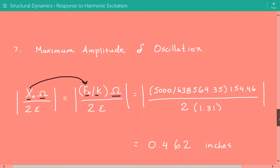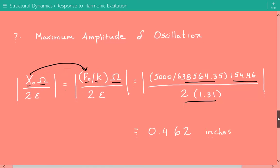So we just plug in the numbers. 5,000 divided by 638,564.35 times 154.46, divided by 2 times 1.31. So the maximum amplitude of oscillation is equal to 0.462 inches.